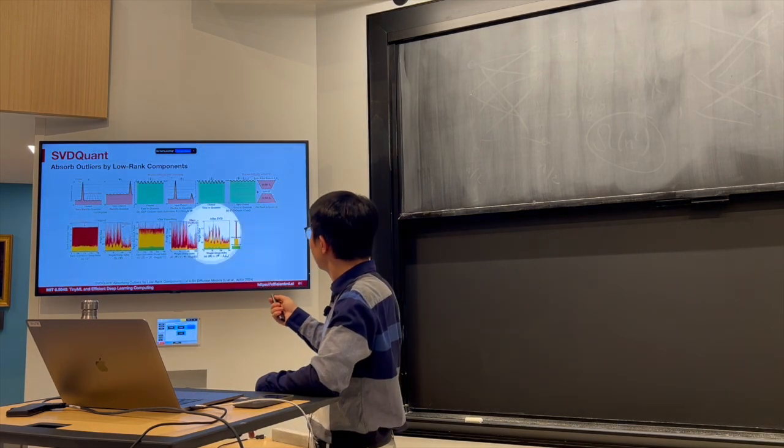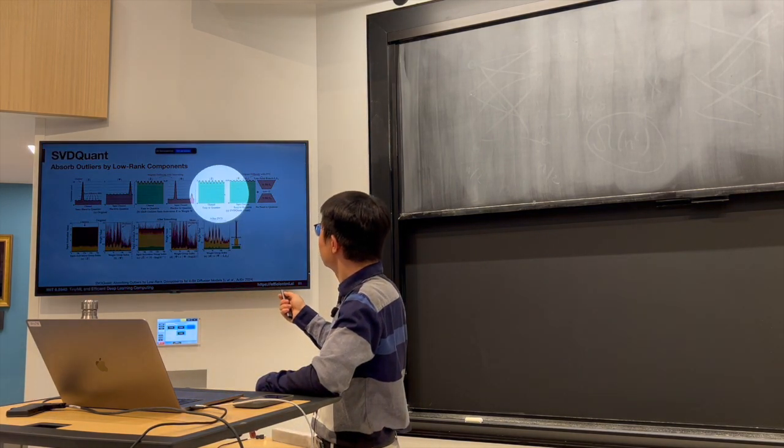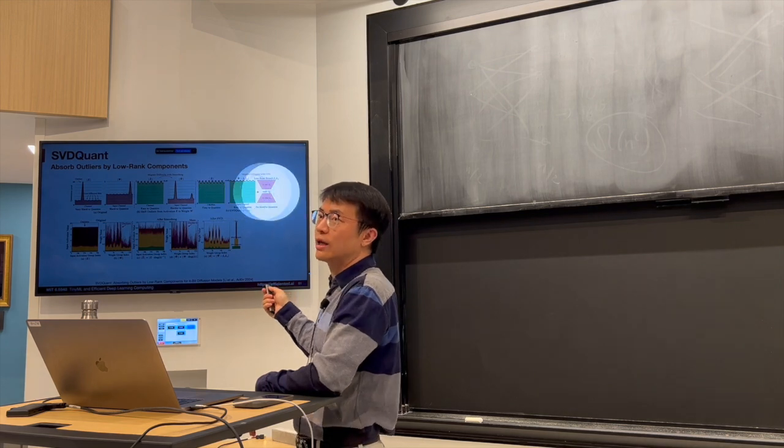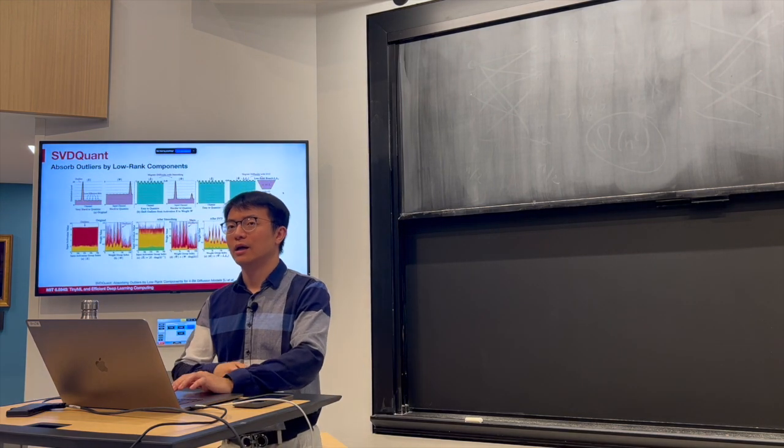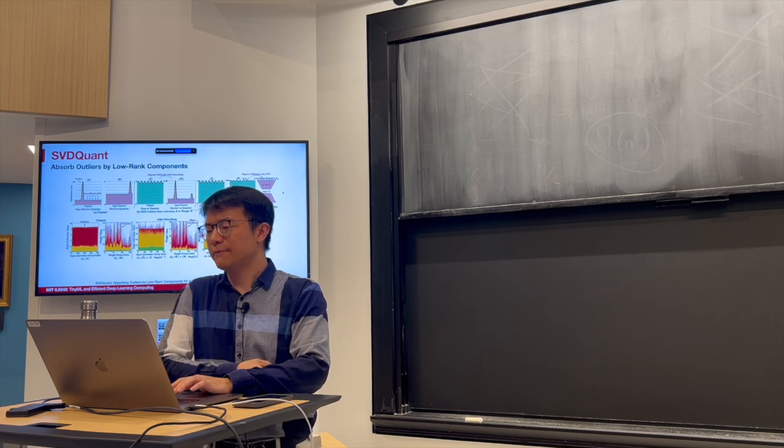So finally, both the weight and activation are 4-bit, but it's very easy to quantize, there's no outlier, and it's associated with a very low-rank side branch.